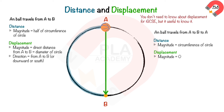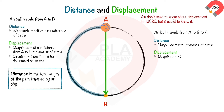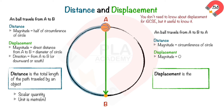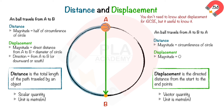Therefore, we can deduce that distance is the total length of the path travelled by an object. Distance is a scalar quantity, which means it has only magnitude and no direction, and its unit is the meter. Displacement is the directed distance from the start to the end point. Displacement is a vector quantity, which means it has both magnitude and direction, and its unit is also the meter.